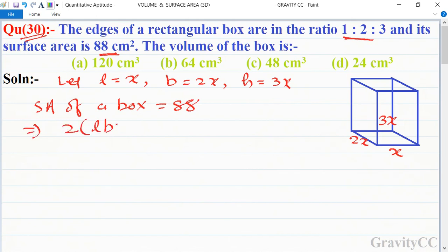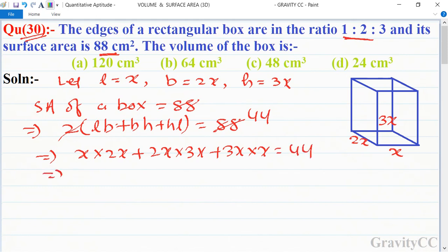to 2(lb + bh + hl) is equal to 88. And 88 is cancel by 2, and the value of l is x into 2x plus 2x into 3x plus 3x into x is equal to 44, so implies